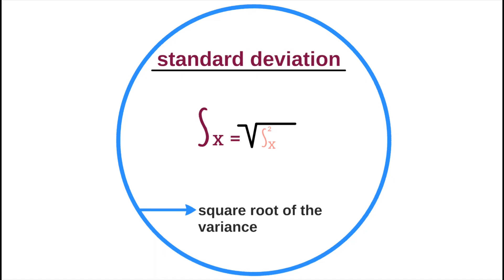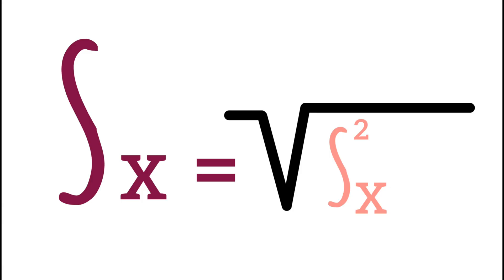The formula for calculating the standard deviation is, therefore, standard deviation equals the square root of the variance.